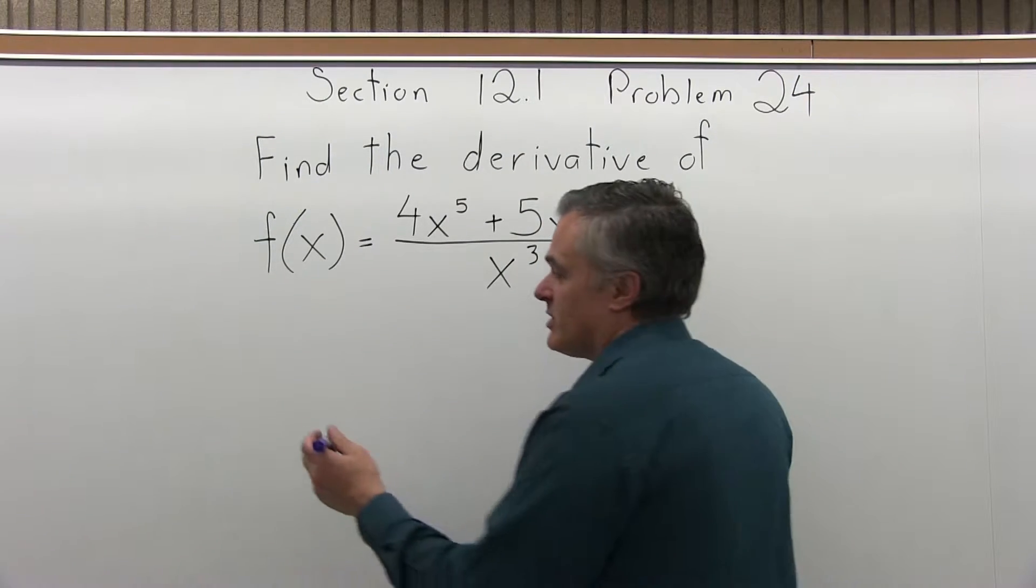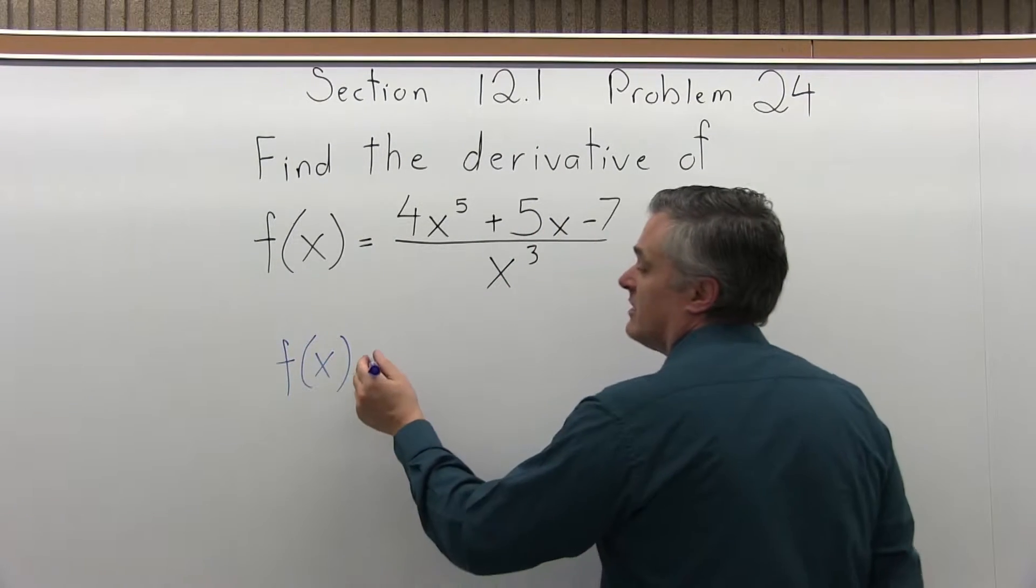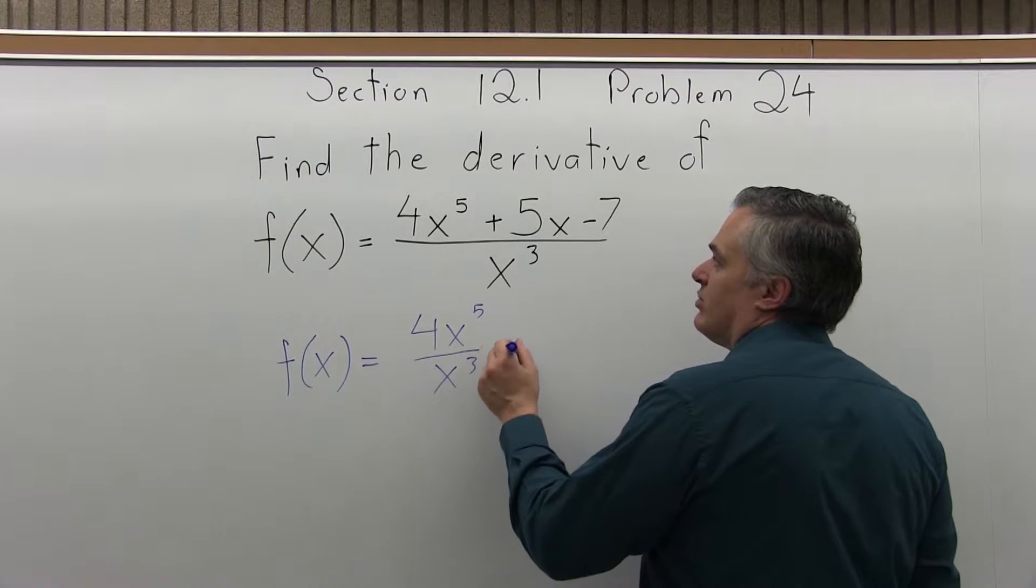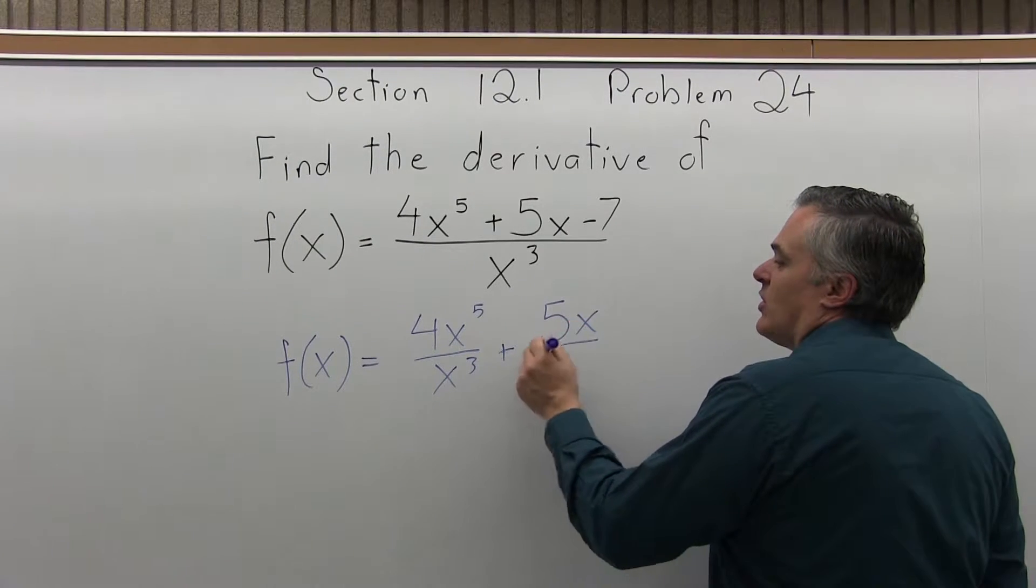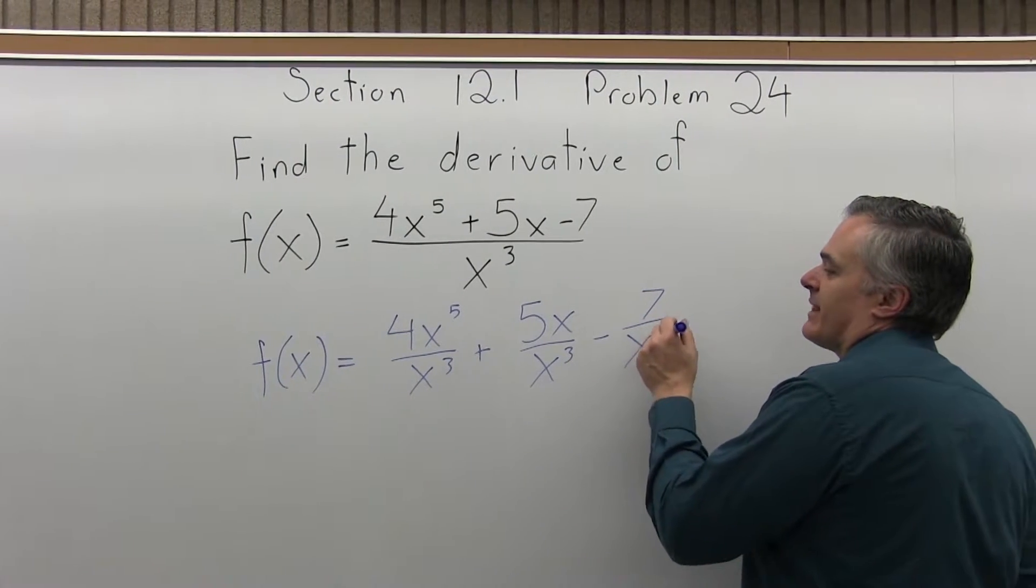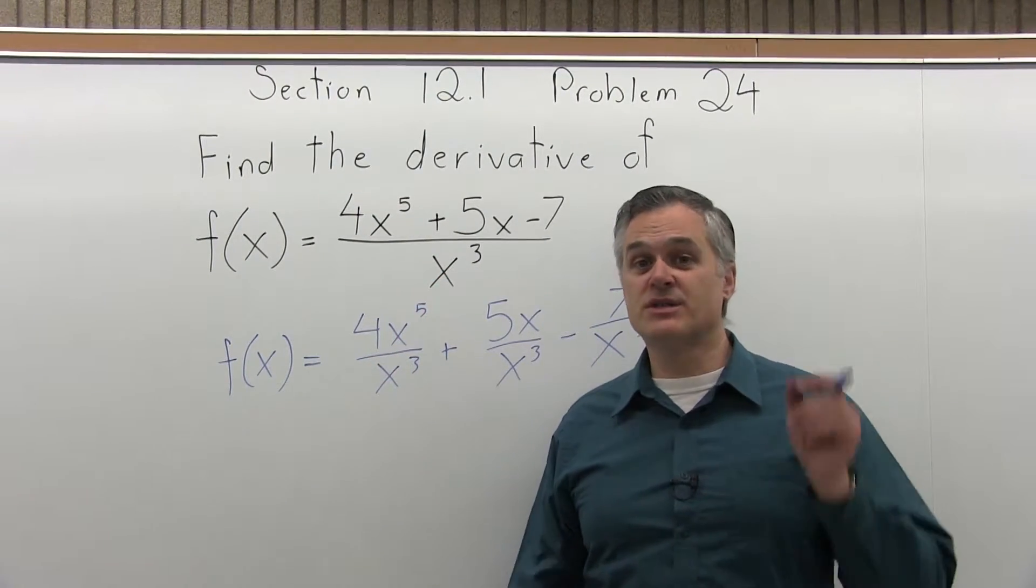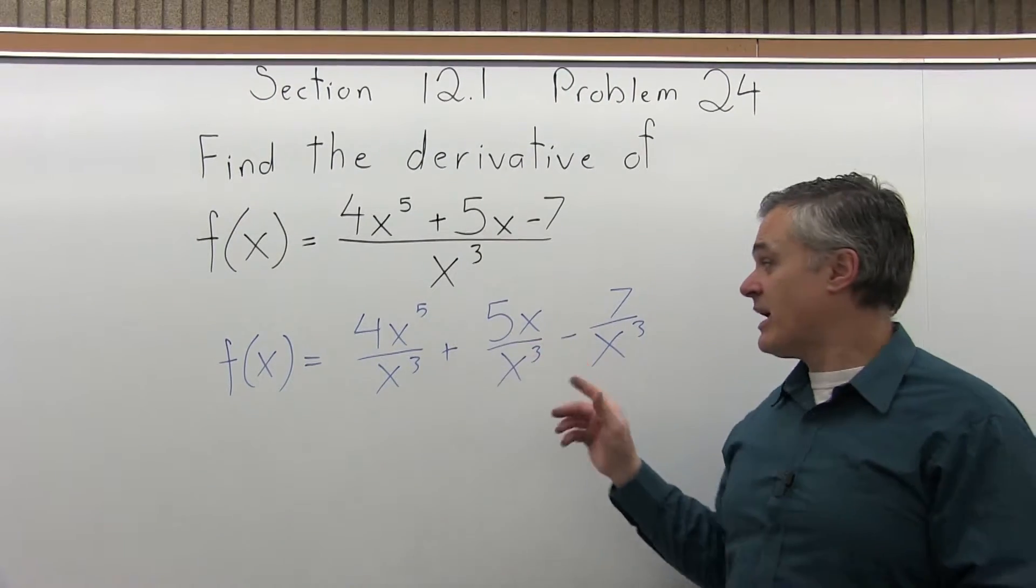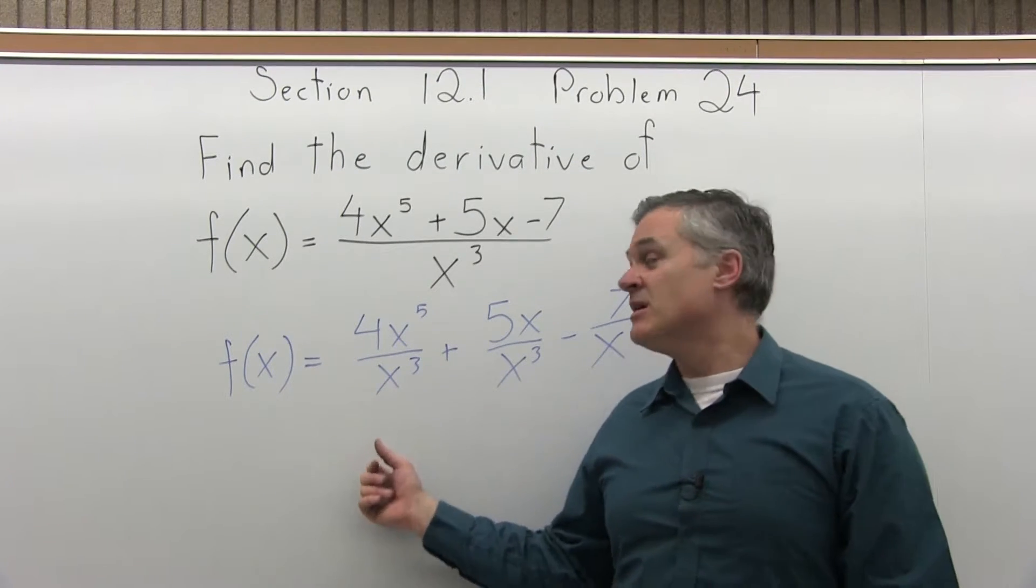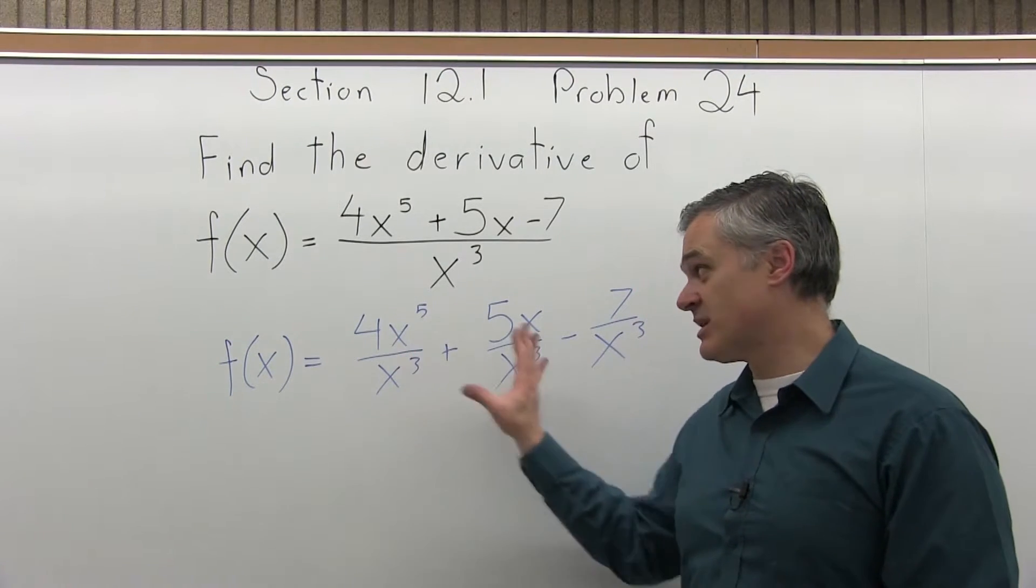So I call this the common denominator trick. What I'm going to do is rewrite the function. So it's still f of x, it's not f prime yet, equals 4x to the fifth over x to the third plus 5x over x to the third minus 7 over x to the third. So instead of one big fraction, I've split it into three little fractions all with the same denominator. And they are equal. Since it has a common denominator, I could put it back this way. But this is better for me having the three separate fractions because now I can reduce and simplify each one in such a way that it'll have no more variable in the denominator.